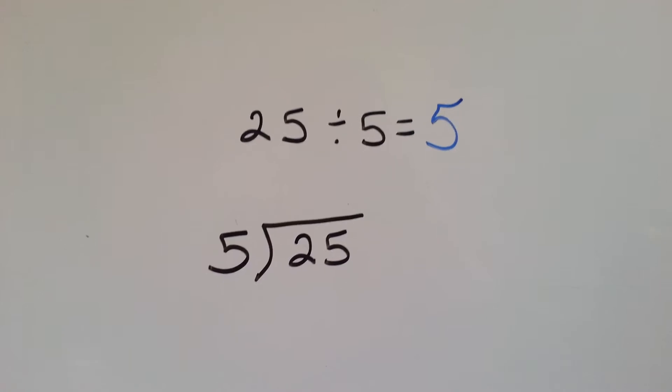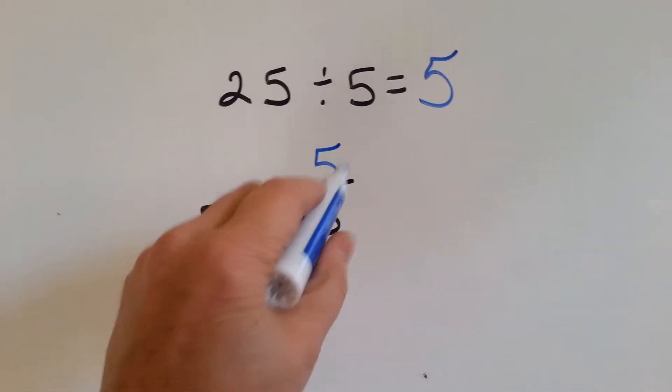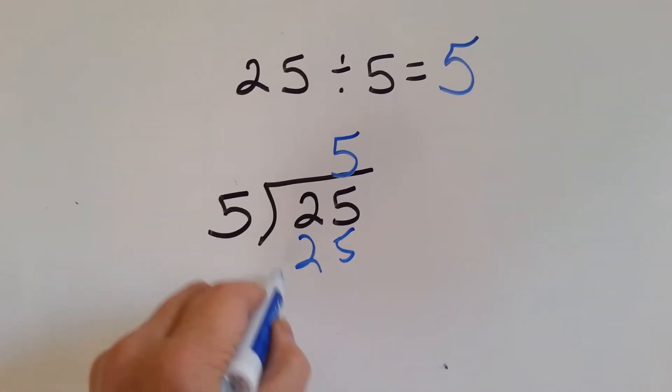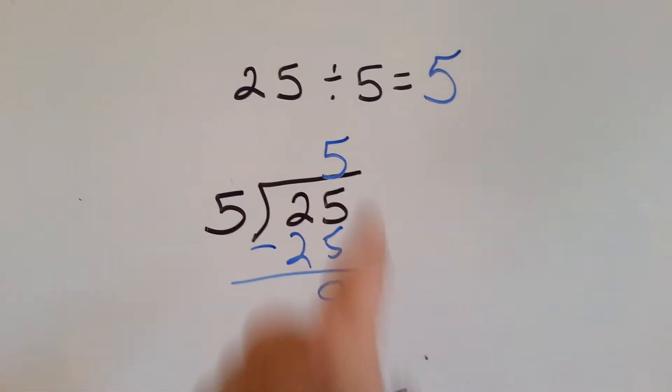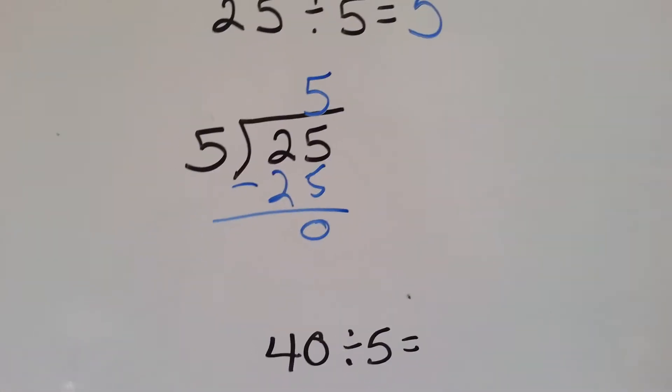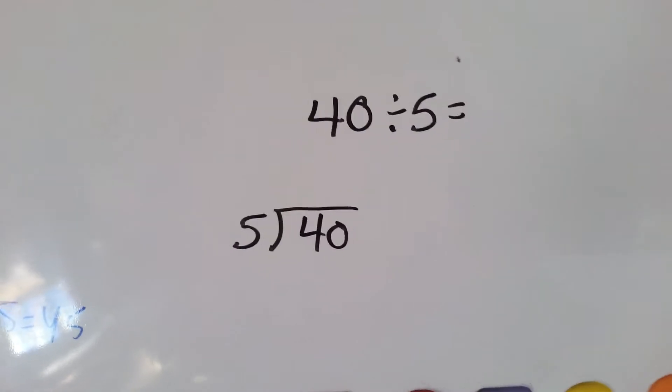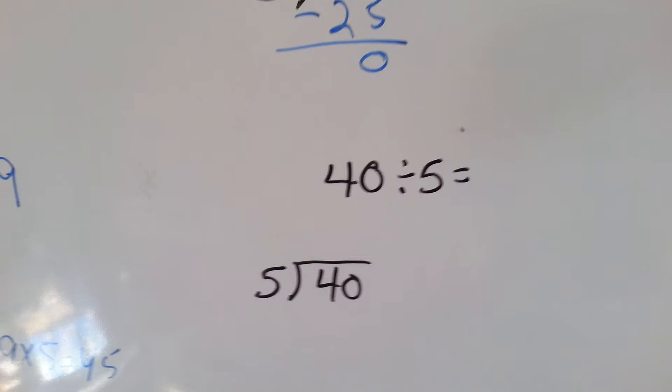Okay, let's put our 5 up here. 5 times 5 is 25. We do our subtraction, and we get 0. When we have 0 left over, that tells us we did it correctly. If we had 1 left over, then we did something wrong. Or if we had 2 or 3 or 4 or 10 left over, that means we did something wrong.